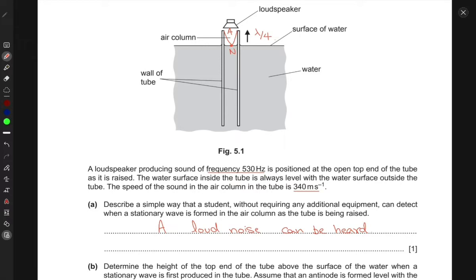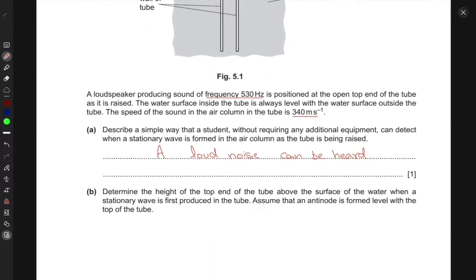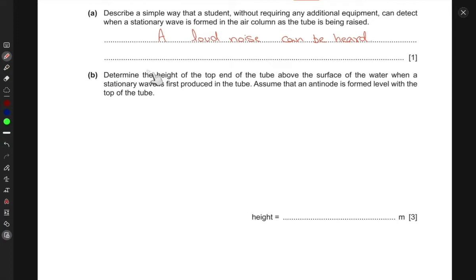Part (b): Determine the height of the top end of the tube above the surface of the water when the stationary wave is first produced in the tube. Assume that an antinode is formed level with the top of the tube.